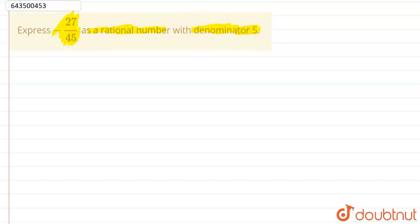Now we need to decrease the denominator to 5. It is given as minus 27 upon 45. We need the denominator as 5. So if I divide 45 by 5, what I get is 9. 45 is 5 multiplied by 9.